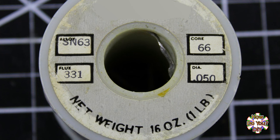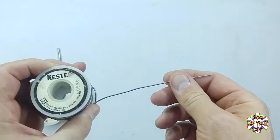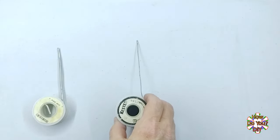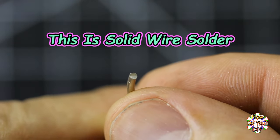For electronic soldering, there is lead-based solder and lead-free solder. Lead-based solder is generally a bit easier to work with, but lead-free solder is a bit safer to use. You also have solid wire solder and rosin core solder.